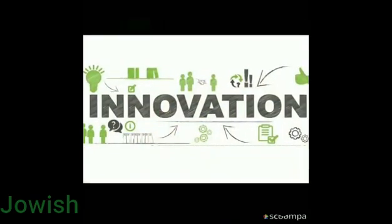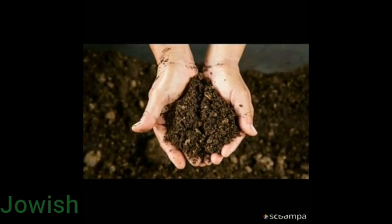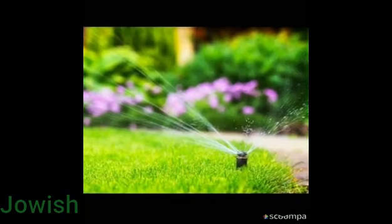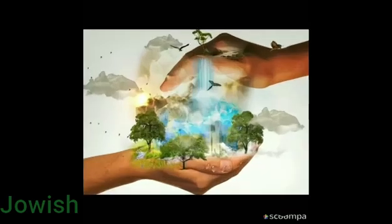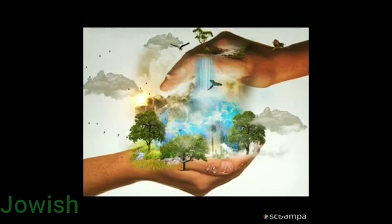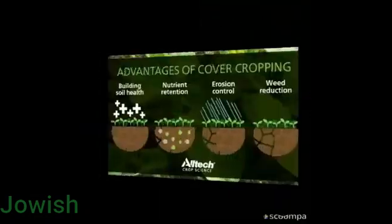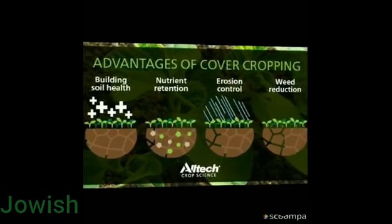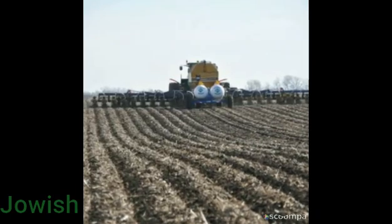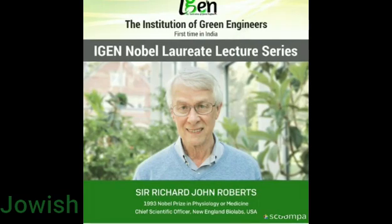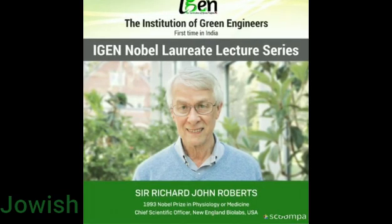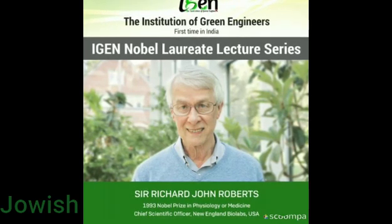How to achieve this? Only by innovation. Number 1: Building and maintaining healthy soil. Number 2: Manage water wisely. Number 3: Minimizing pollution. Number 4: Promoting biodiversity. Some examples include agriculture by crop rotation, planting cover crops, and eliminating tillage. We are giving you a great opportunity to meet Nobel laureate Sir Richard John Roberts to talk on this topic on 25th August 2020.